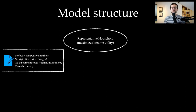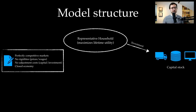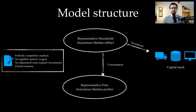The representative household is an artificial construction — let's think about it in terms of the average behavior of the household sector. The household owns the capital stock and decides whether or not to save. Savings are used to add to the capital stock — in other words, to make investments. The rest that is not invested is used for consumption. The consumption good is produced by the representative firm, which similarly represents the average behavior of the firm sector.